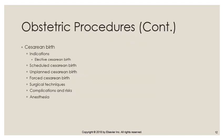Cesarean births have various indications. Elective cesarean births are less common now than before. Scheduled cesarean births occur when there is a known indication — such as a platypelloid pelvis with an inlet less than the required 9.5 centimeters, or a previous classical or T-shaped uterine incision, in which case every subsequent delivery will be by cesarean section.